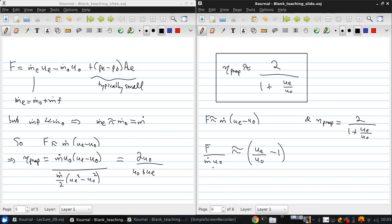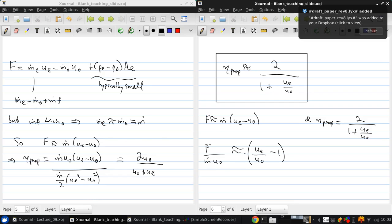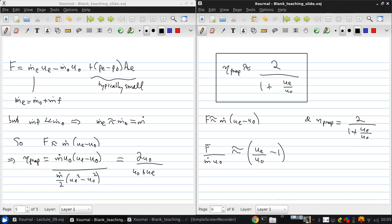So what we see is that as ue over u0 increases, the non-dimensional thrust, thrust per unit mass flow, increases as well. But the propulsive efficiency decreases as ue over u0 increases. And if we use the limiting low value of ue over u0 of 1, then we see that the thrust goes to 0, but the propulsive efficiency goes to 1.